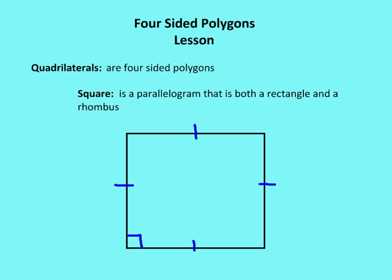A square is a parallelogram that is both a rectangle and a rhombus. As a rectangle, it has all angles equal to 90 degrees. As a rhombus, all sides are congruent. So in a square, the opposite sides are parallel and congruent, all sides are congruent to each other, and all angles are right angles.